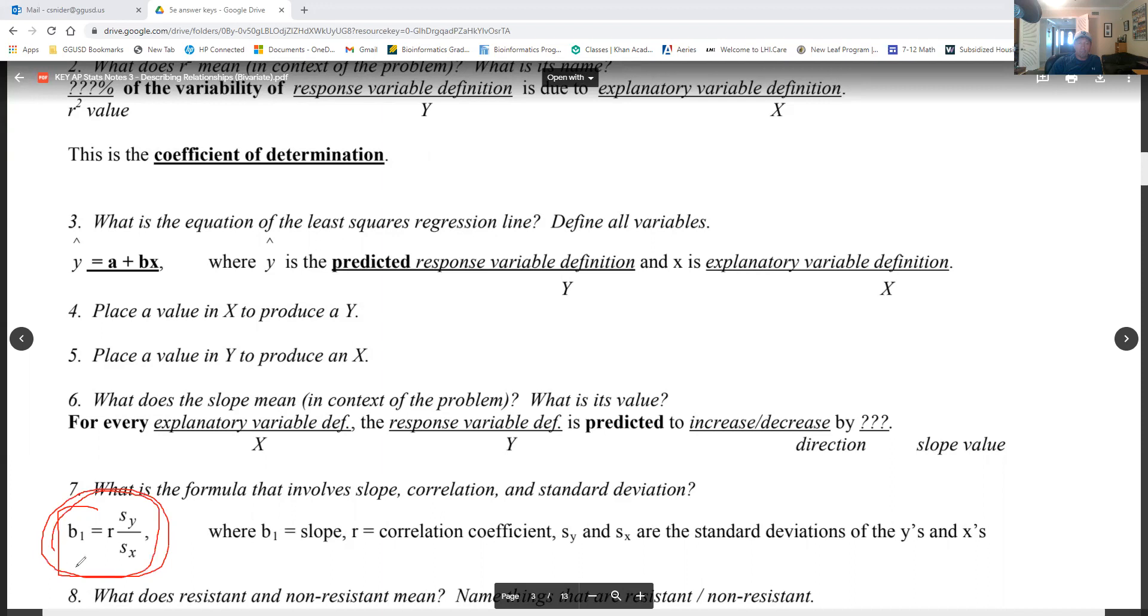Number seven: this is on the green formula sheets in the back of the room that you use on AP test day. It's on there. So r is s sub y over s sub x. In any event, where r is the correlation coefficient and s sub y and s sub x are the standard deviations of the x's and y's. It's pretty simple, it's pretty cool. This is a hybrid of change in y over change in x being slope. And remember, b is slope in statistics, not m. And r is the correlation coefficient.